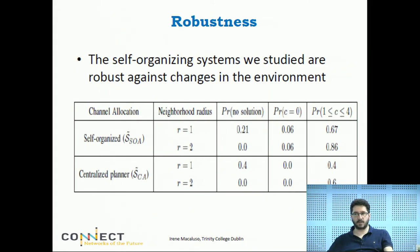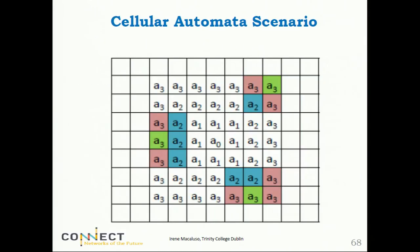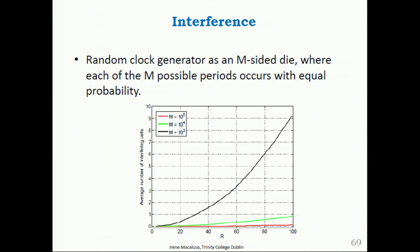Any questions so far? So you can model a problem of channel allocation as a complex system and benefit in terms of robustness. We have more work on our website and other papers being written. We applied a similar framework to wireless sensor networks and vehicular ad-hoc networks. The interference for the self-organizing one is shown here — the average number of interfering cells out of 10,000 is small, and increasing M for desynchronization brings it essentially to zero.